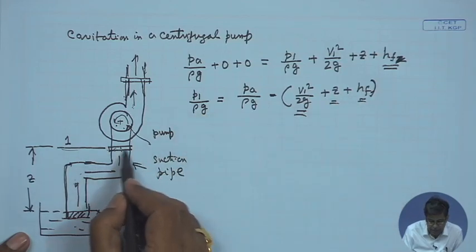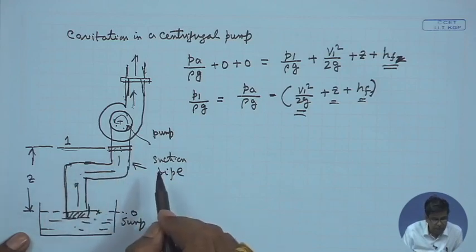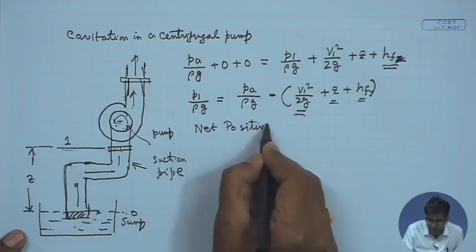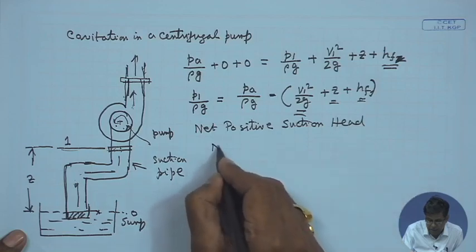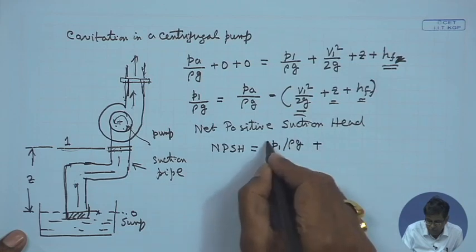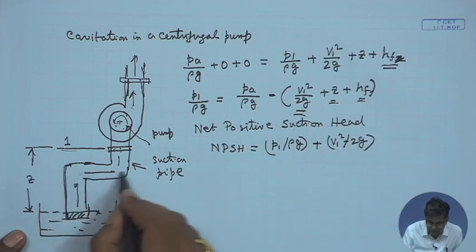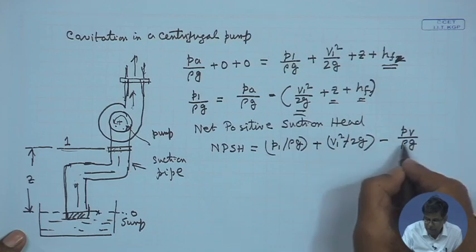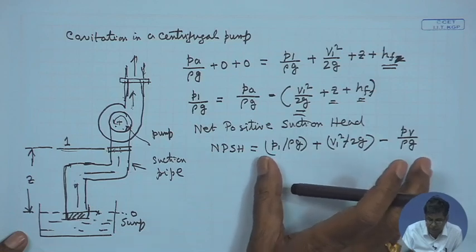There is a likelihood that cavitation may occur here if we allow this pressure to fall below the vapor pressure of the water at the working temperature. We define — in a similar way to turbines — the net positive suction head (NPSH) as the sum of the pressure head plus the velocity head at the outlet of the suction pipe over the vapor pressure head, P_v / ρg, where P_v is the vapor pressure at the working temperature.